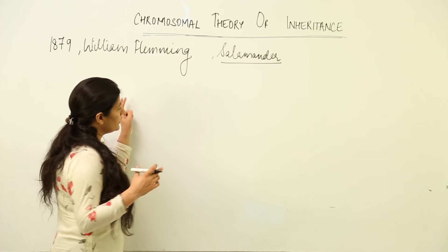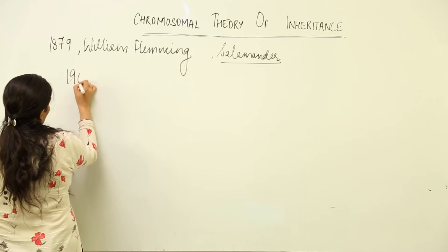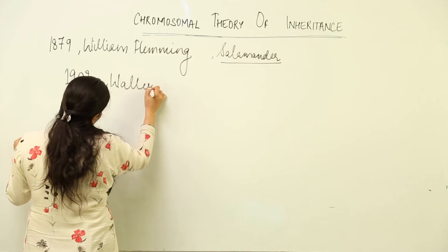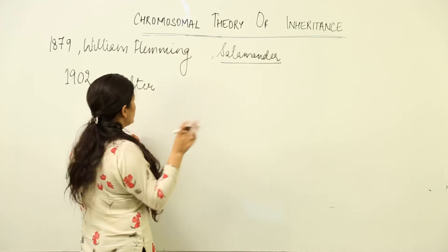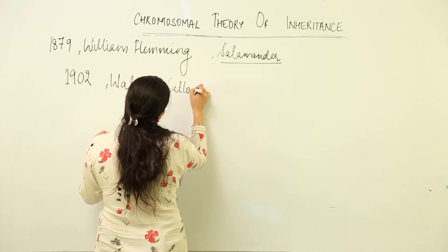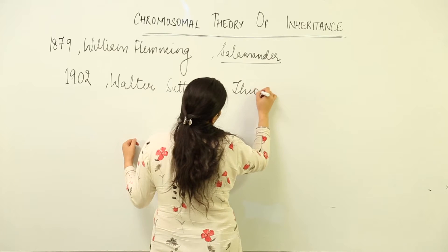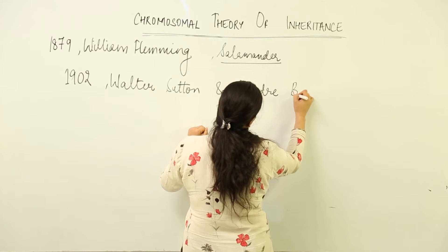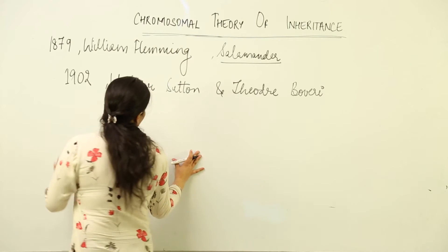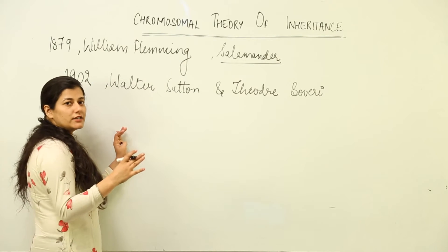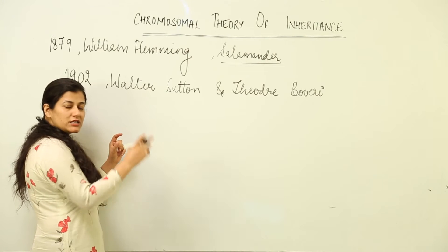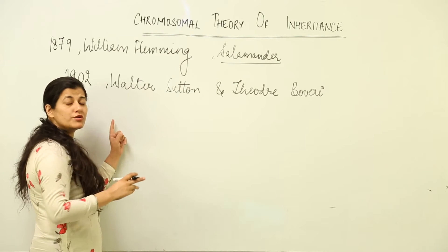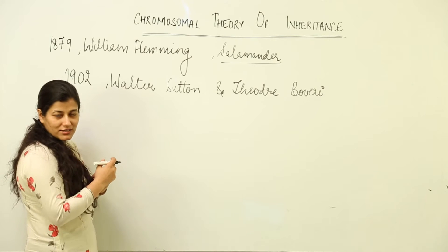In 1902, two cytologists, Walter Sutton and Theodore Bovery, individually studied the behavior of chromosomes during meiosis. When they studied the chromosomes during meiosis, it was observed that there was a parallel between what Mendel had proposed and what these two people proposed regarding the chromosomes.